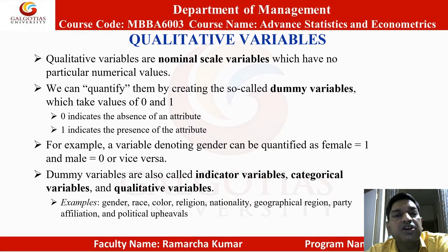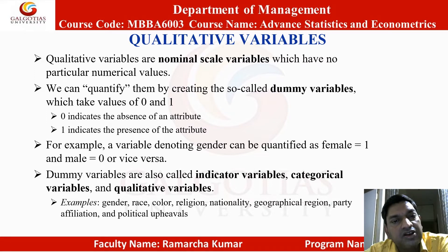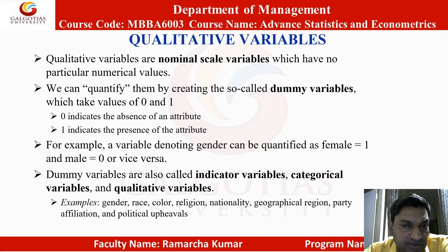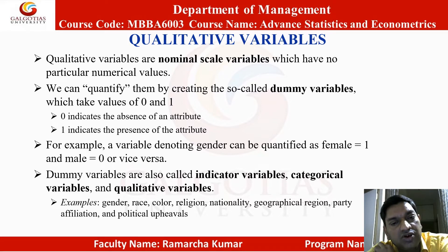Qualitative variables are nominal scale variables which have no particular numerical values. We can quantify them by creating the so-called dummy variables which take values of 0 and 1. 0 indicates the absence of an attribute, 1 indicates the presence of that attribute. For example, a variable denoting gender can be quantified as female is equal to 1 and male is equal to 0, or vice versa.